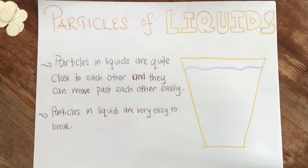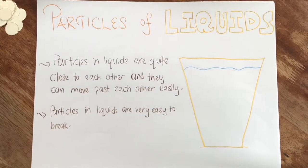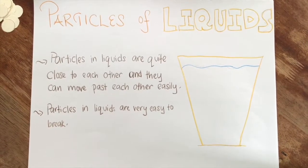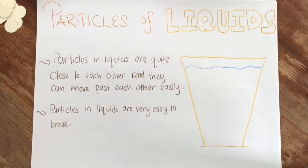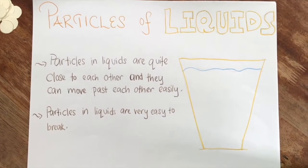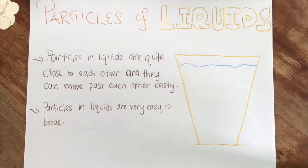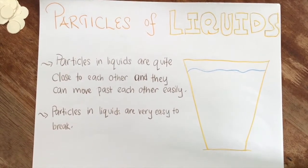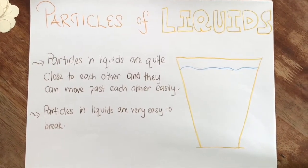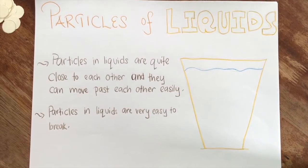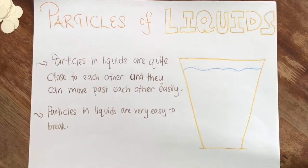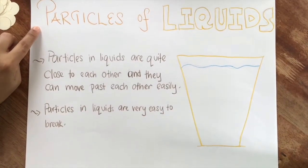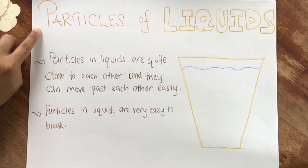Hello children! Remember our lessons on particles? We learned that all matter is made up of very tiny little particles, and they move differently and are arranged differently. We already learned about solid particles — how particles in solids are arranged and how they move. Today we're going to see how particles of liquids are arranged and how they move.